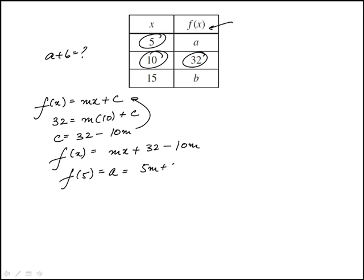And then f(15) would be b, and that's going to be equal to 15m plus 32 minus 10m.